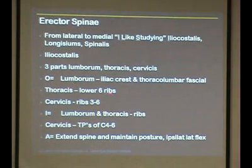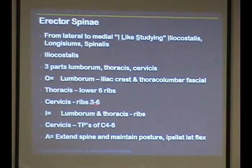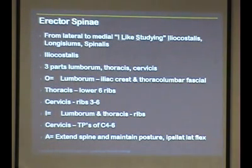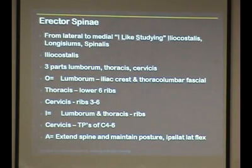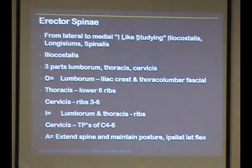Depending on the portion, you have the lumborum part coming from the iliac crest, the thoracic part from the ribs, and the cervicis part a bit higher. So it works its way up: lumborum, thoracis, then cervicis. All these muscles extend the spine when both sides contract, and laterally flex when only one side contracts.